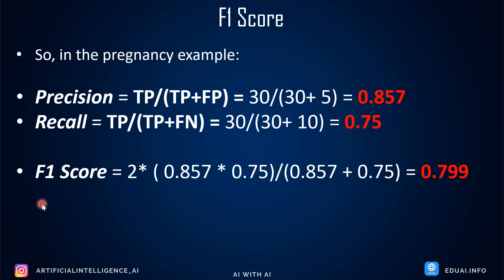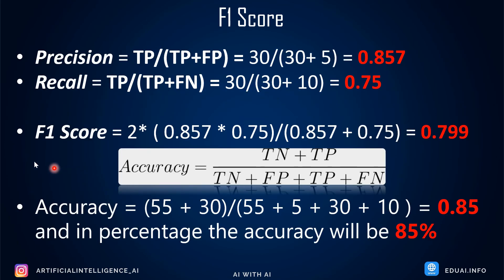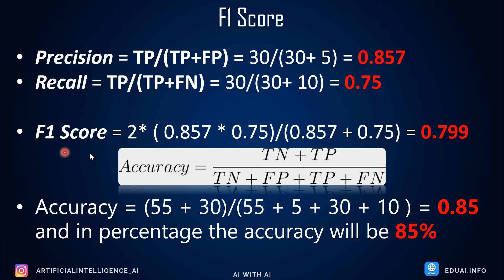If you recall, when we calculated accuracy for this same example in the previous video, we got 85%. But the F1 score gives us 80%. This shows why accuracy is misleading for imbalanced or biased datasets — the F1 score gives a more truthful picture. So for imbalanced data, we calculate model performance using precision, recall, and F1 score instead.